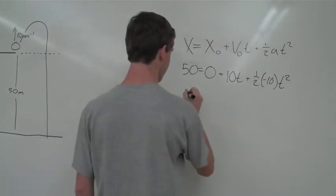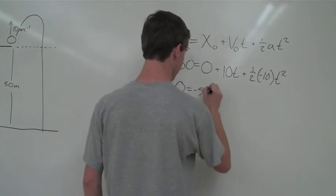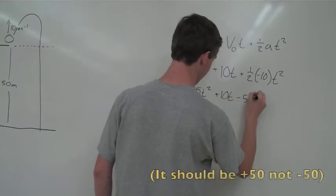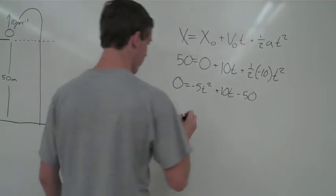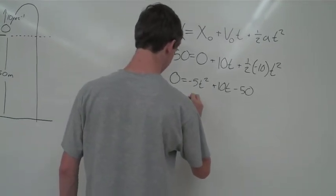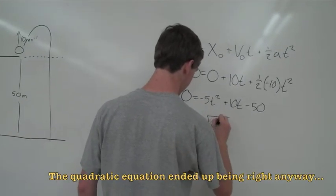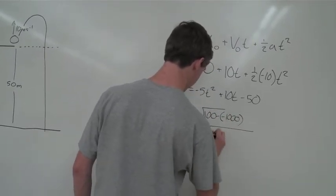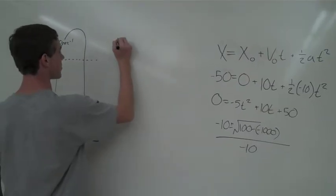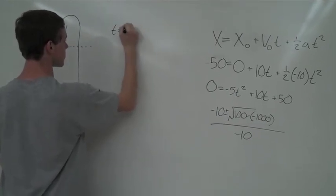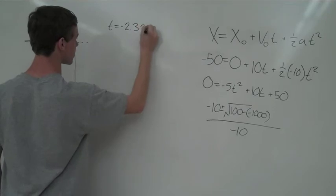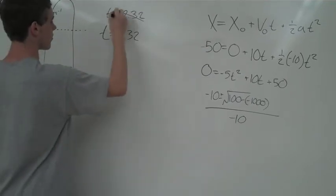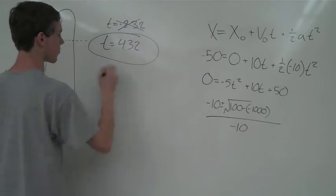Turning this into a quadratic equation gives us: 0 equals negative 5t squared plus 10t minus 50. Plugging into the quadratic formula, we get negative 10 plus or minus the square root of 100 minus negative 1,000, all over negative 10. Solving this yields two values for t: t equals negative 2.32, and t equals 4.32. Since time cannot be negative, t must equal 4.32 seconds.